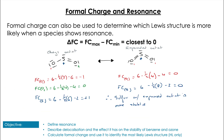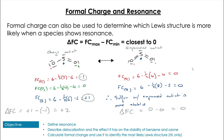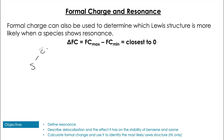We can further quantify this using delta FC: take the maximum formal charge and subtract the minimum formal charge — whichever compound gives a delta FC closest to zero is more likely. For the octet-rule SO2, maximum is plus one and minimum is minus one, giving delta FC of plus two. For the expanded octet SO2, maximum is zero and minimum is zero, giving delta FC of zero — showing quantitatively that sulfur dioxide with the expanded octet is more stable.